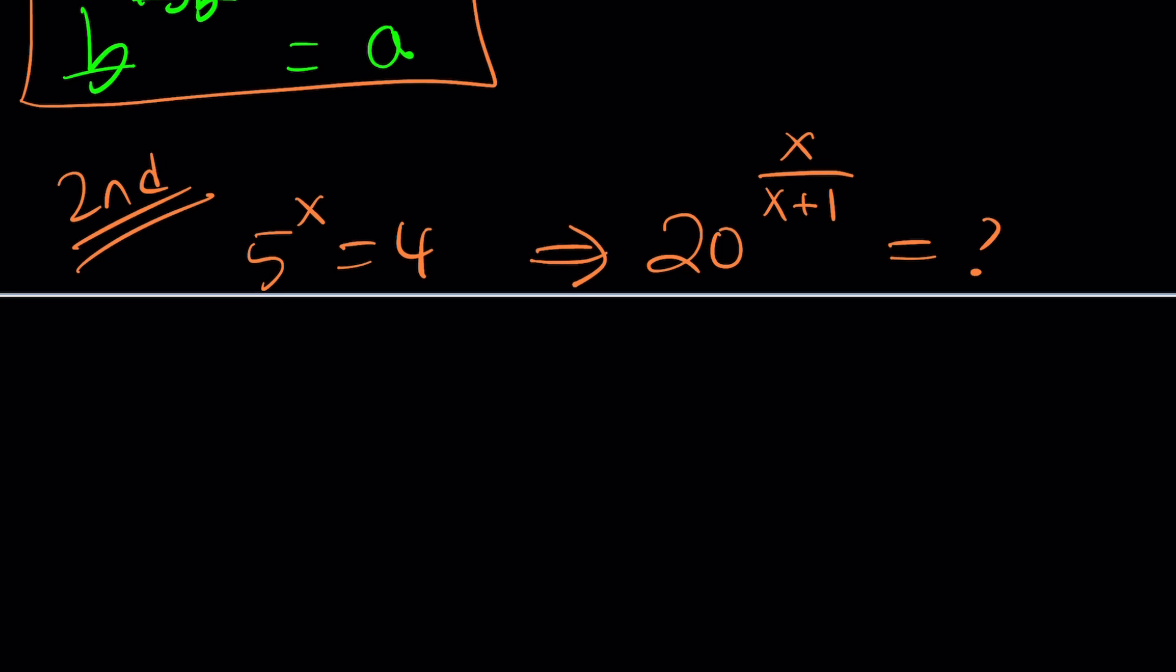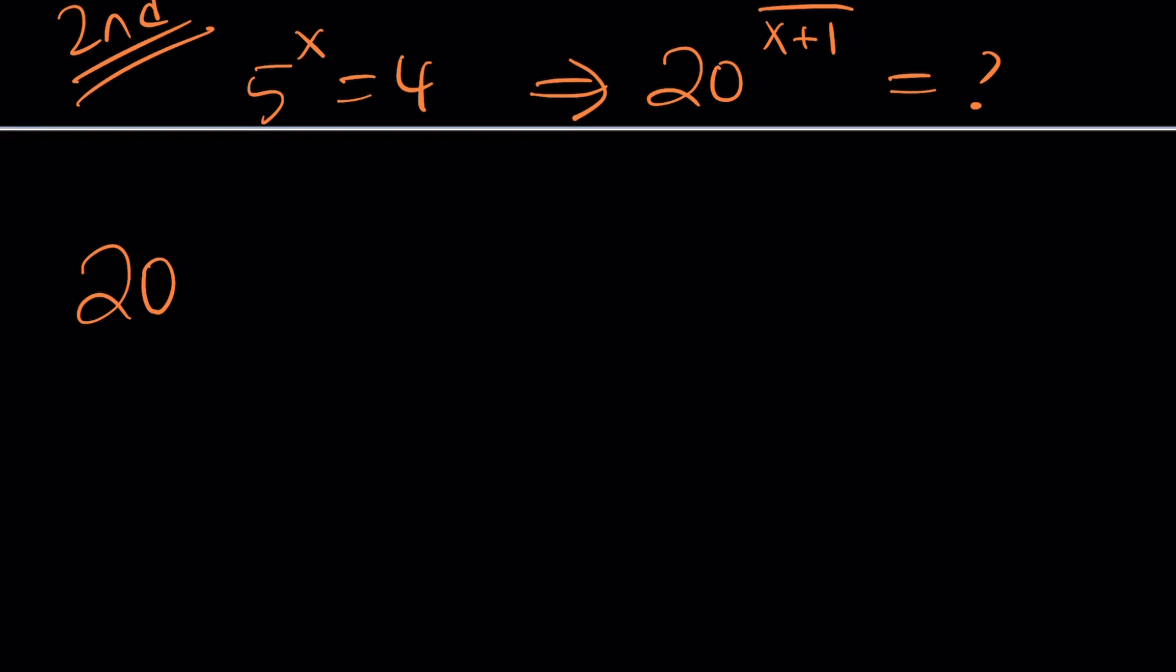I'm going to go ahead and first split the numerator and the denominator because the denominator is kind of causing some problems. So let me go ahead and write it this way. 20 to the power x over x plus 1. Let me write it as 20 to the power x to the power 1 over x plus 1. Later on, I may have to work with that in a different way. But let's wait for that time. Now, 20 to the power x is actually closer to what we're trying to use. 5 to the x and 20 to the x. What do you think?